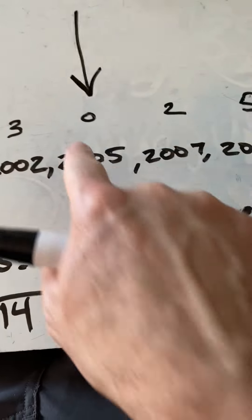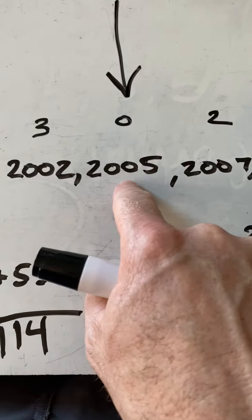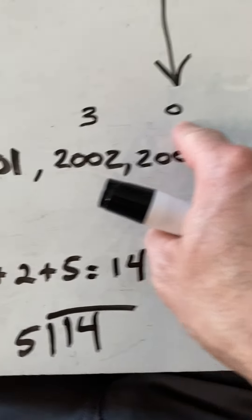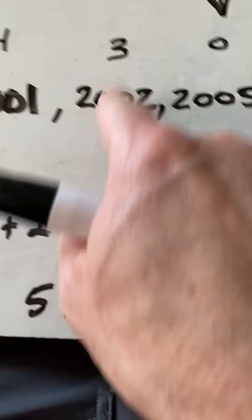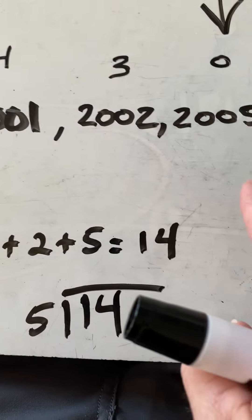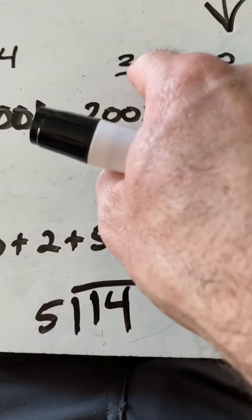So how far is each year from the mean? Well, 2005 is on the mean, so that's 0. But if I look at 2002, that was 3 years before the mean. 2005 minus 2002 is 3.